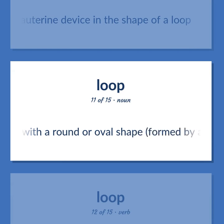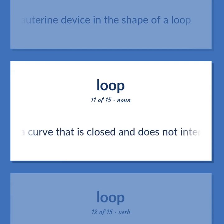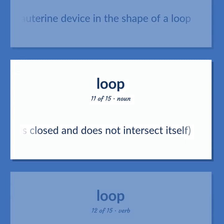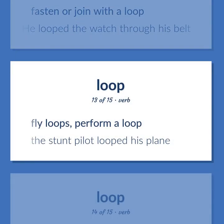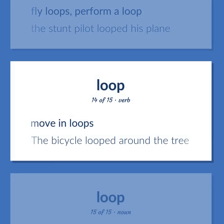Anything with a round or oval shape, formed by a curve that is closed and does not intersect itself. Fasten or join with a loop. He looped the watch through his belt. Fly loops; perform a loop. The stunt pilot looped his plane. Move in loops. The bicycle looped around the tree. The basic pattern of the human fingerprint.